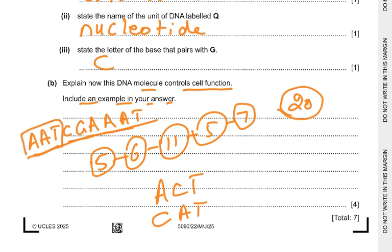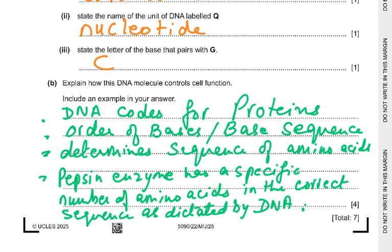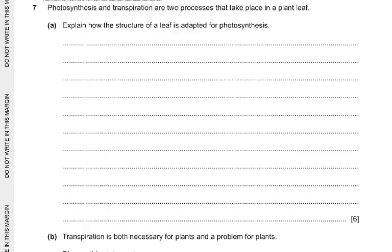Every three bases code for one amino acid. The next three bases dictate the second amino acid, and so on. So: DNA codes for proteins, the base sequence determines the sequence of amino acids, and the pepsin enzyme has a specific number of amino acids in the correct sequence as dictated by the DNA. This applies to any enzyme — amylase, trypsin — or hormone like insulin.